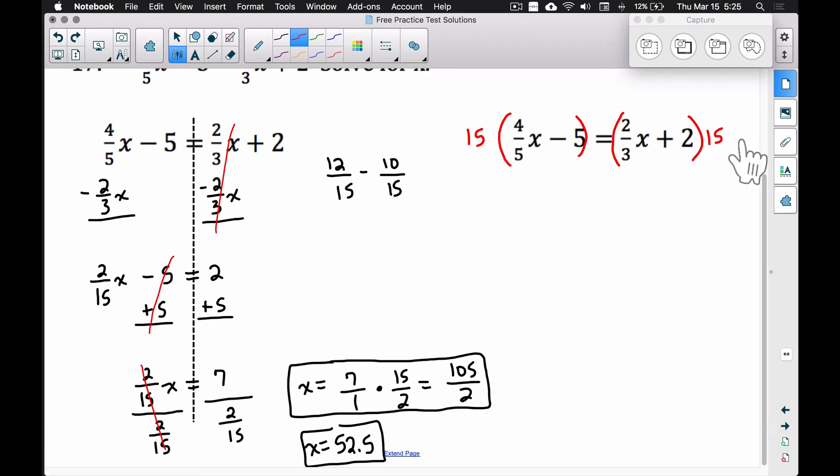When we take 15 times 4 fifths, you're really trying to find 4 fifths of 15. You could take 15 times 4, that gives you 60 divided by 5, that gives you 12. So we have 12X. Another way to think about it: take the 15 divided by 5 first, that gives you 3 times 4, boom, there's our 12 again. Don't forget to distribute the 15 over here as well. 15 times 5 is 75, but watch your signs, we have minus 75 equals. Now let's distribute the 15 over here as well.